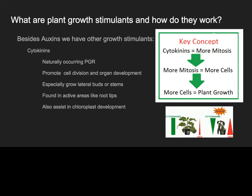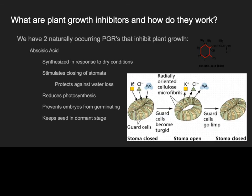So those are all three of our growth promoters: auxins, gibberellins, and cytokinins. Now we're into the inhibitors — I'm only going to go through two. The first one is abscisic acid, and that is a growth inhibitor.